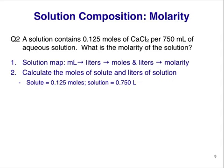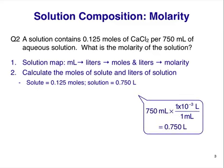We converted the volume units for the solution. If you don't remember conversion units, here is the conversion from milliliters to liters. The conversion factor is 1 × 10⁻³ liters divided by 1 milliliter. The numerator and denominator are the same quantity but expressed in different units. We chose this form, not its upside-down version, so that the units cancel properly in our calculation.